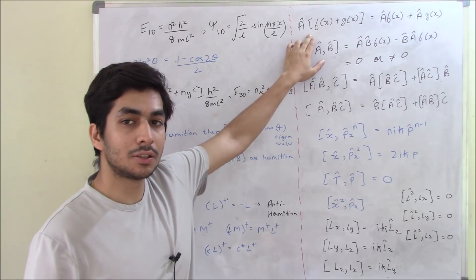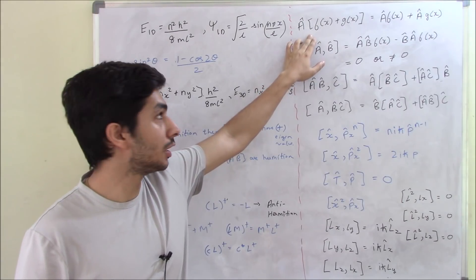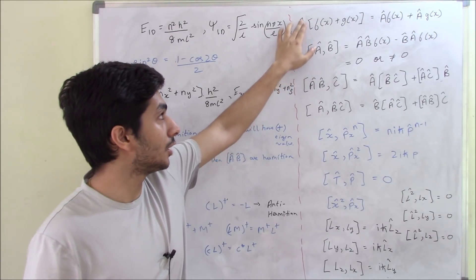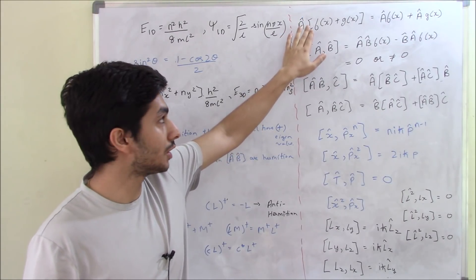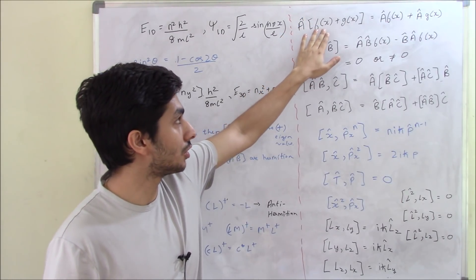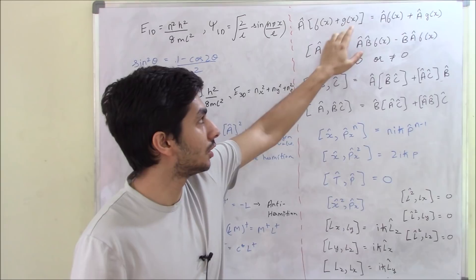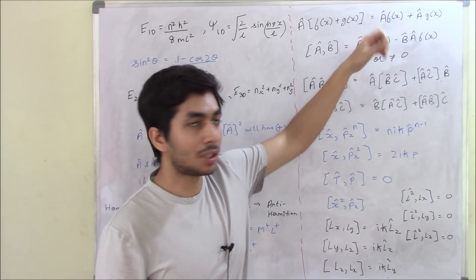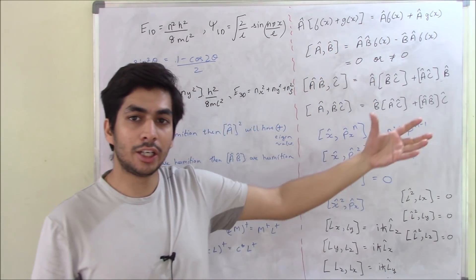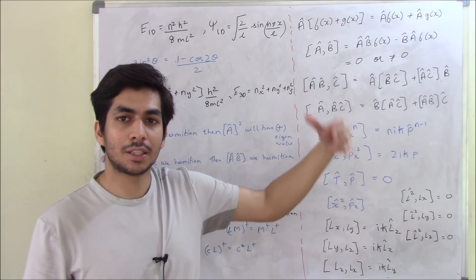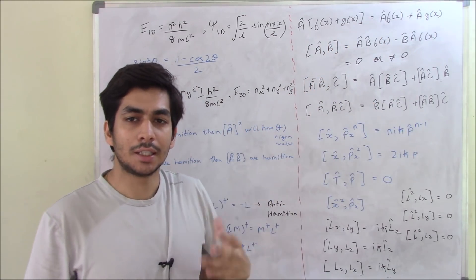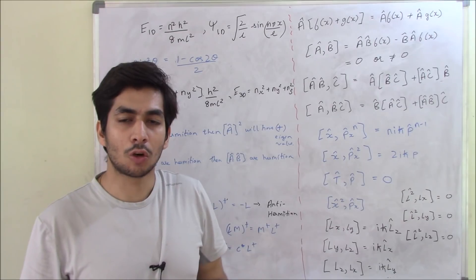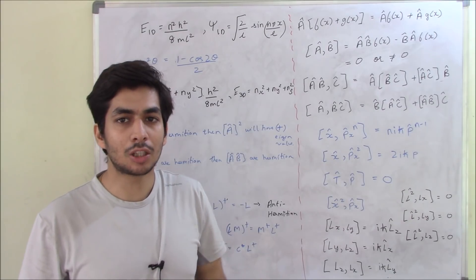The condition for a linear operator is: any operator A acting on some function f(x) and g(x) — if it is equal to operator A acting individually on f(x) and g(x) — that is said to be a linear operator.